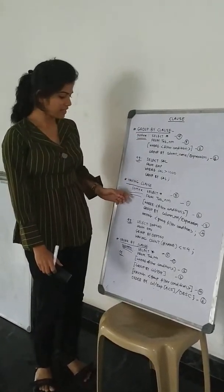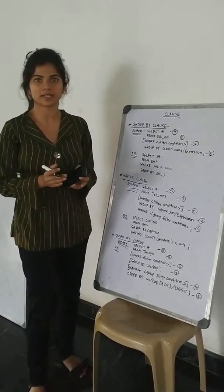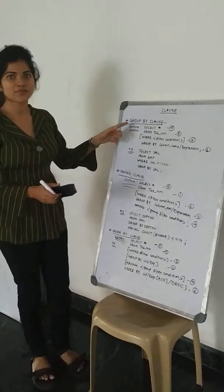GROUP BY, HAVING, and ORDER BY. In GROUP BY, to group the records together, we use the GROUP BY clause. Here is the syntax for the GROUP BY clause.